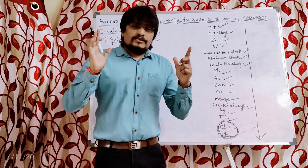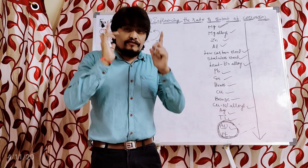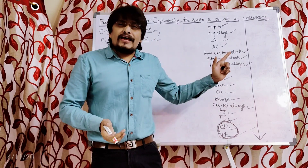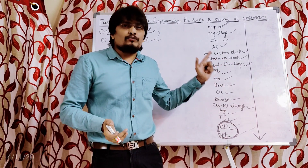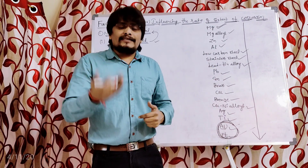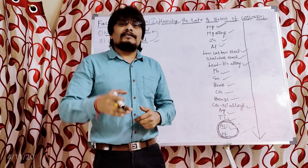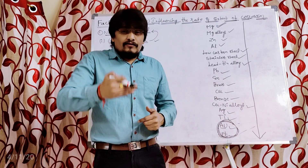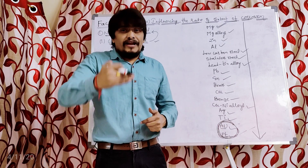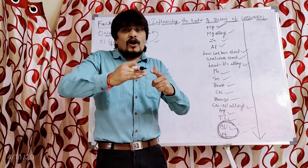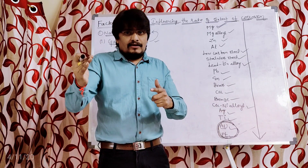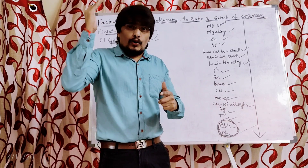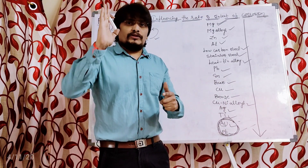I hope you understood this first sub-factor, the galvanic series, which is part of the nature of metal category. This is very important from the examination point of view. In another class, I'm going to explain the remaining sub-factors under the category of nature of metal, which influences or affects the rate and extent of corrosion. Thanks so much.